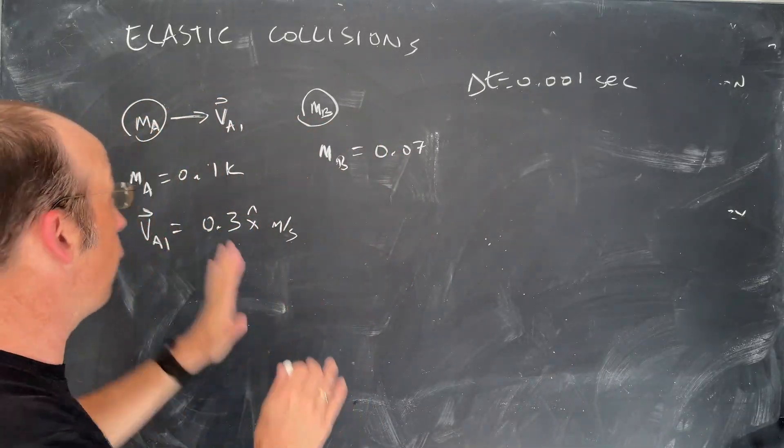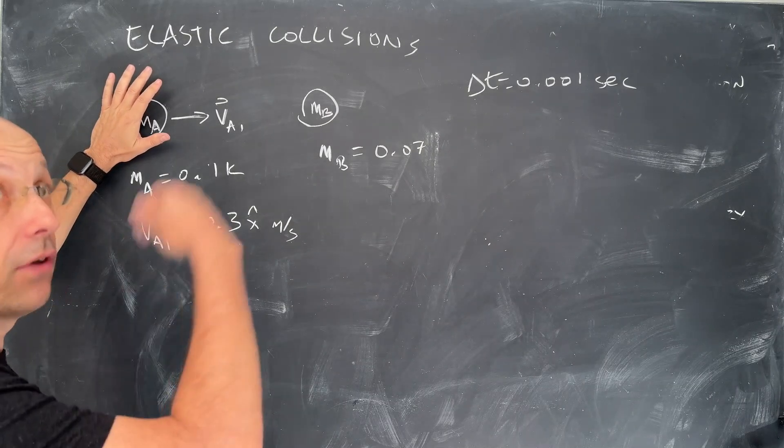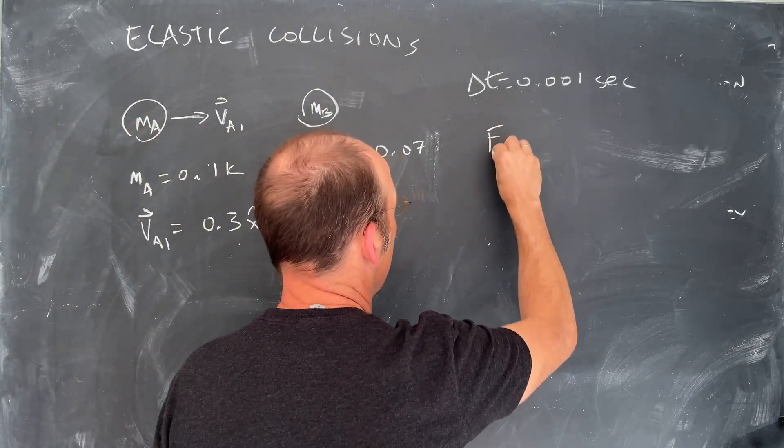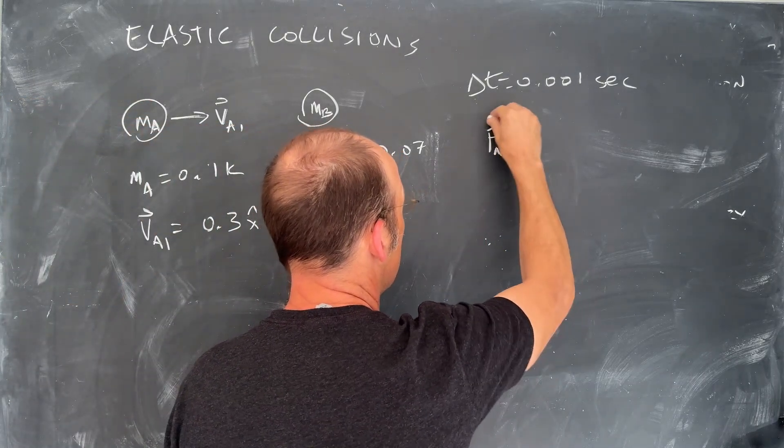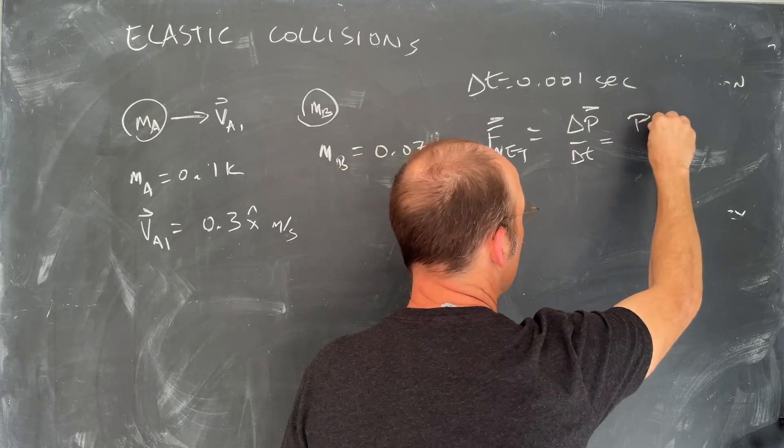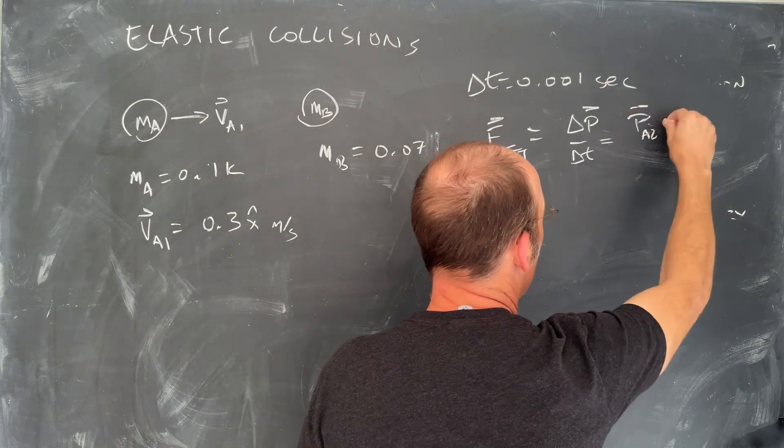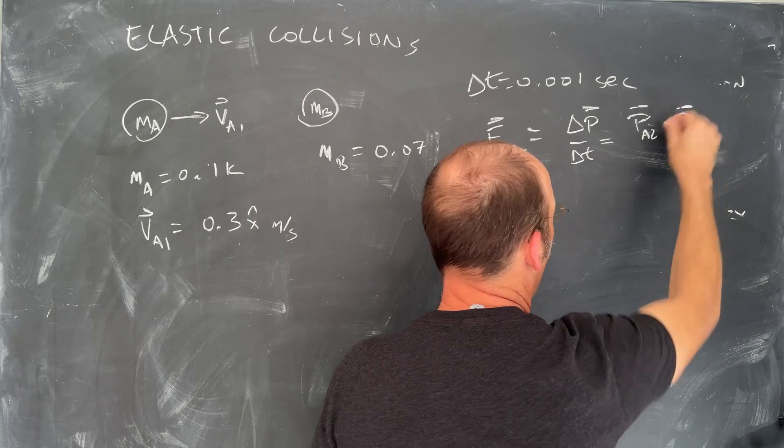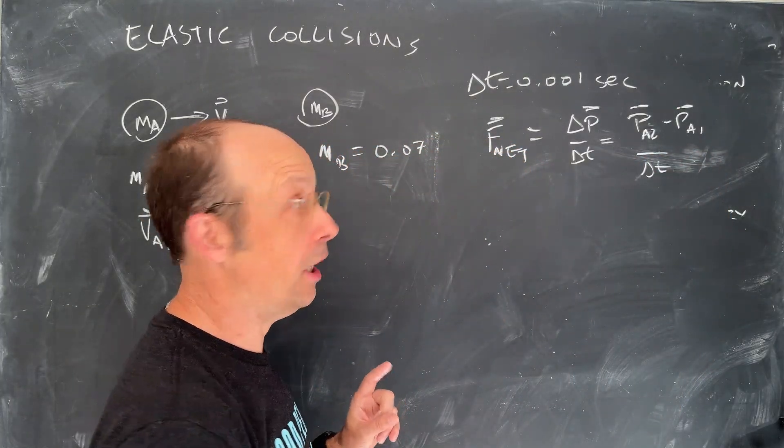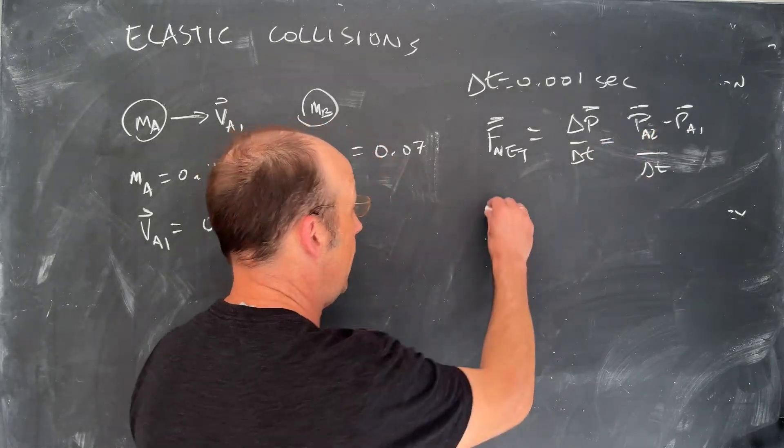So during that short time interval, I can calculate the force on this object and use that to update its velocity. In the past we calculated the acceleration, but remember the momentum principle says this. The net force is the change in momentum with respect to time. So that's P2. I'm going to call this for object A. So this is going to be PA2 minus PA1 over delta T.